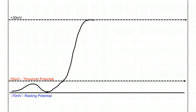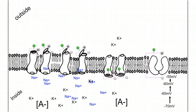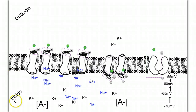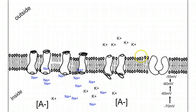Once the voltage across the membrane reaches positive 30 millivolts, all of the sodium channels will shut and the potassium channels will open. Once the potassium channel is open, potassium is going to rush out of the cell down its concentration gradient. As these positive charges are leaving, the voltage difference across the membrane starts to move back negative, in a repolarization event.